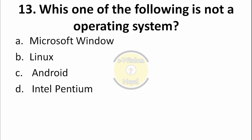Question number 13: Which one of the following is not an operating system? Microsoft Windows is a well-known operating system. Linux and Android are also operating systems — Android is used in mobile devices. Option D — Intel Pentium — is not an operating system. So option D is the correct answer.